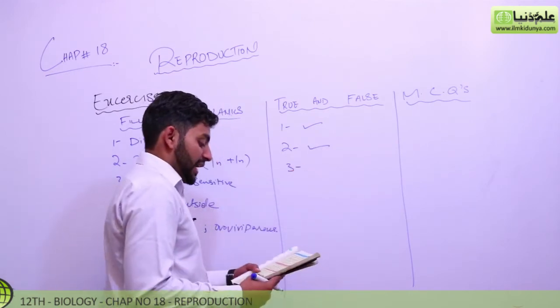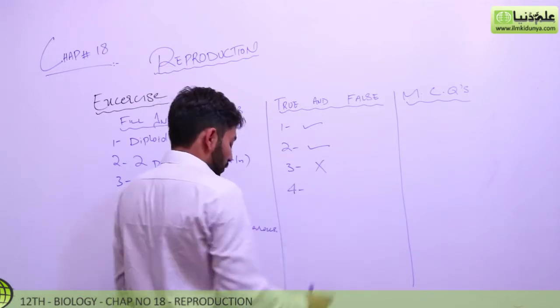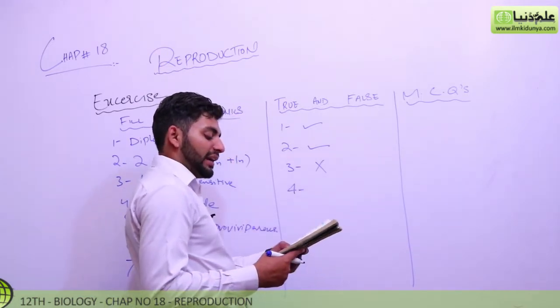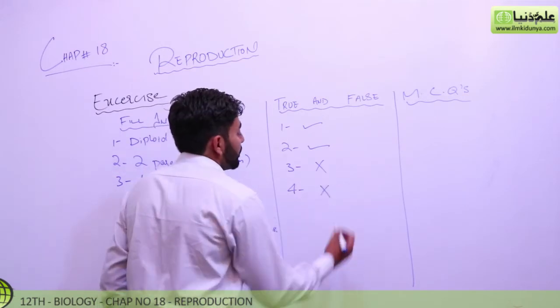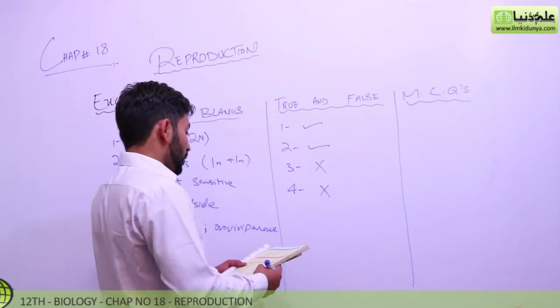In third one, sexual reproduction involves single parent? No. In sexual reproduction, you have two parents. In fourth, you have asked, sexually produced offspring are identical to their parents? No. There are variations in them. They are not exactly like their parents. In that way, we have MCQs.